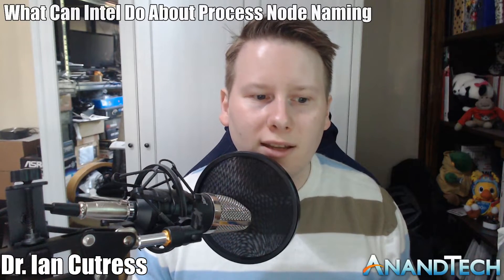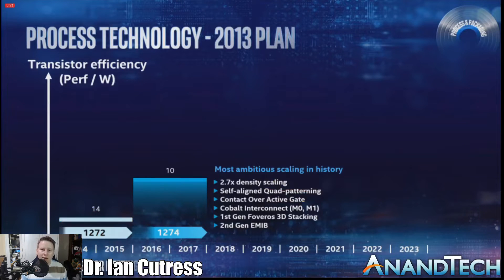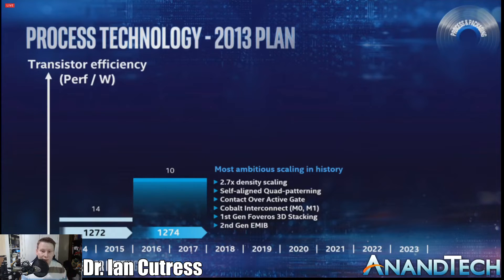Let's start with exactly what we're dealing with here. This is Intel as they specified in their 2013 plan. We have 14nm here at 2014 and 2015, moving into 10nm 2016-2017. Intel repeatedly stated that they wanted to ship a form of 10nm product, and they initially did in December 2017, albeit limited in scope, and that was called Canon Lake.